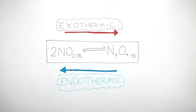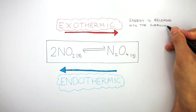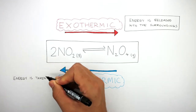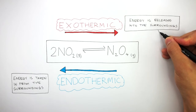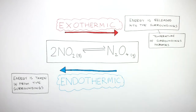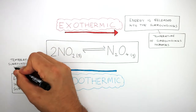In the exothermic direction, energy is released into the surroundings, and in the endothermic direction, energy is taken in from the surroundings. In the exothermic direction, when energy is released into the surroundings, this causes the temperature of the surroundings to increase. And in the endothermic direction, when energy is taken in from the surroundings, this causes the temperature of the surroundings to decrease.